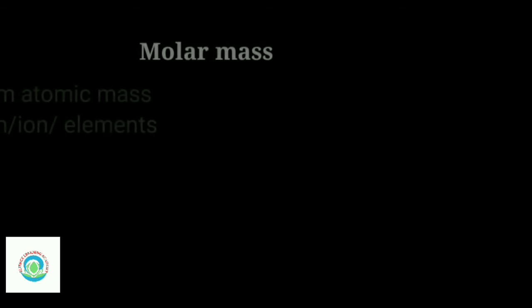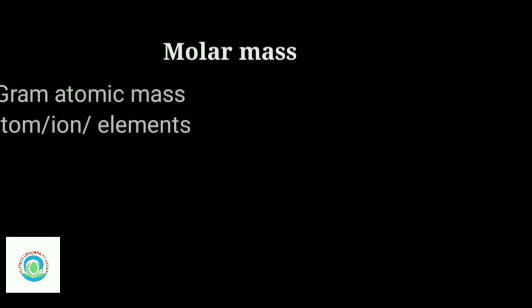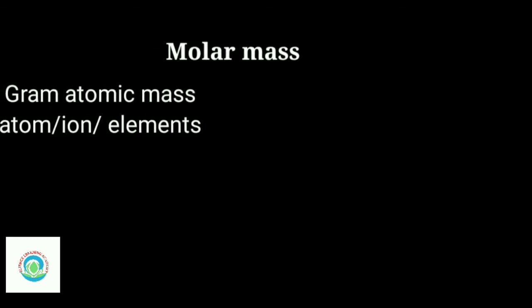If we talk about gram atomic mass, we measure it in two categories: gram atomic mass and gram molecular mass. If we talk about gram atomic mass, we talk about atoms, ions, and elements - hydrogen, oxygen, helium, sodium.